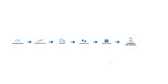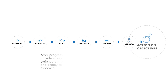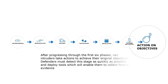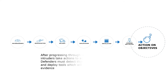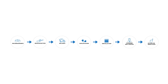After progressing through the first six phases, intruders can take actions to achieve their original objectives. Defenders must detect this stage as quickly as possible and deploy tools which will enable them to collect forensic evidence. The need is to perform an organization-wide due diligence to detect security negligence and employ proper due care solutions, which provide advanced visibility and appropriate response actions at each step of this attack kill chain.